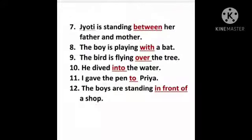Seven: Jyoti is standing between her father and mother. Between — बीच में. जो Jyoti है वो अपने मम्मी और पापा के बीच में खड़ी है. The boy is playing with a bat — जो boy है वो बैट के साथ खेल रहा है. With — के साथ. The bird is flying over the tree — जो bird है वो tree के ऊपर से उड़ रहा है. Over — ऊपर से.